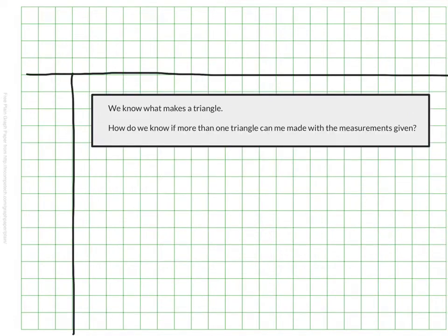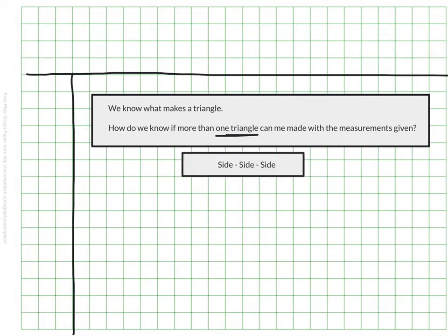We know how to be sure a triangle can be made. But here's the big question for today: how do we know if more than one triangle can be made, or do the measurements produce just one unique triangle? Let's imagine someone tells us three side lengths they want made into a triangle — say, side lengths of 6, 4, and 9.